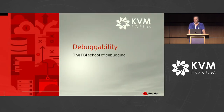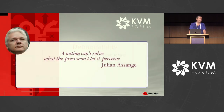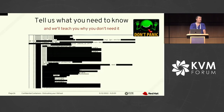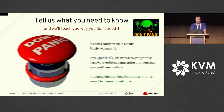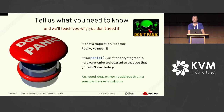What about debuggability? Let me call it the FBI school of debuggability. To quote Julian Assange: "A nation can't solve what the eye won't let it perceive." Well, if you debug and your logs look like encrypted gibberish, you've got a problem. My suggestion is: don't panic — not in the sense of "do not panic," but in the sense of don't ever call panic. Because if you call panic, we have to offer a cryptographic hardware-enforced guarantee that you won't see the logs. Any good ideas on how to address this in a sensible manner are welcome.